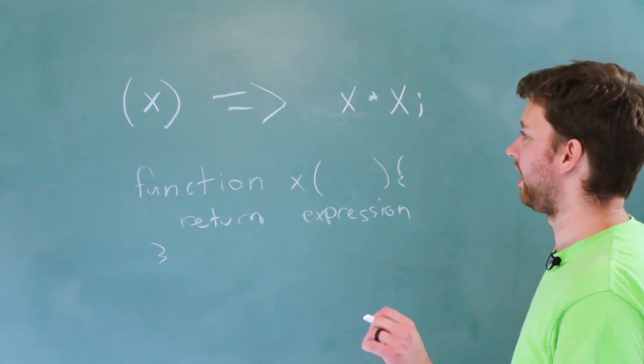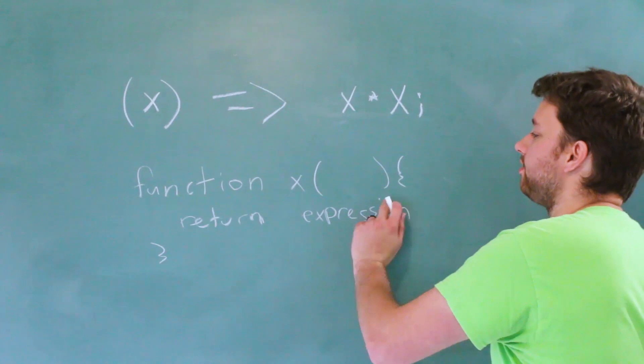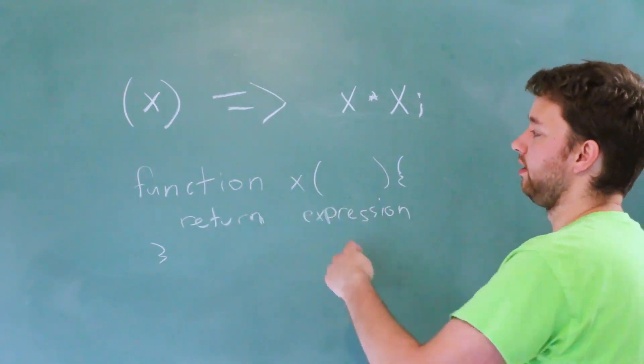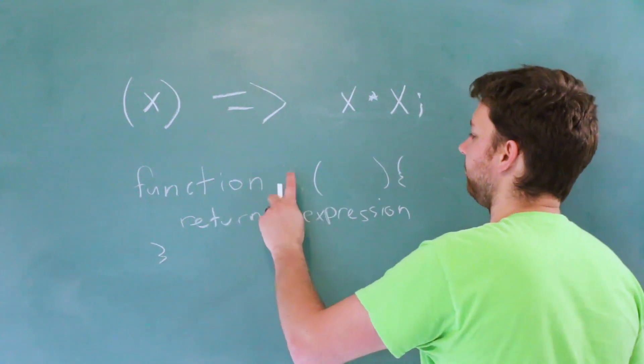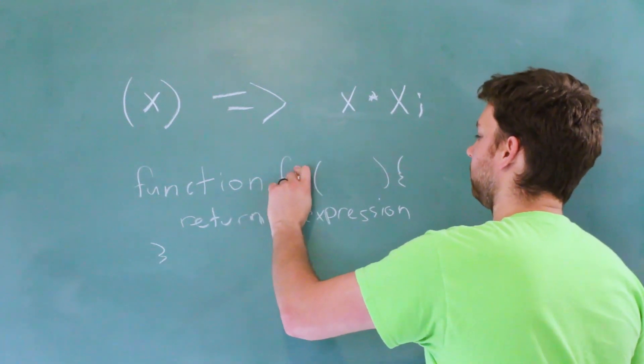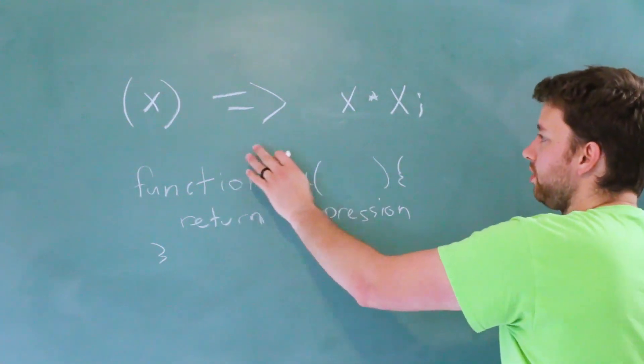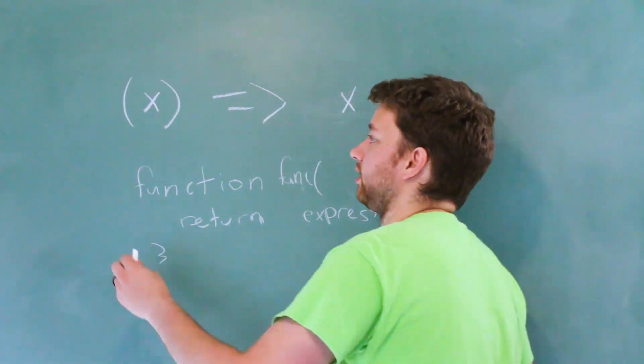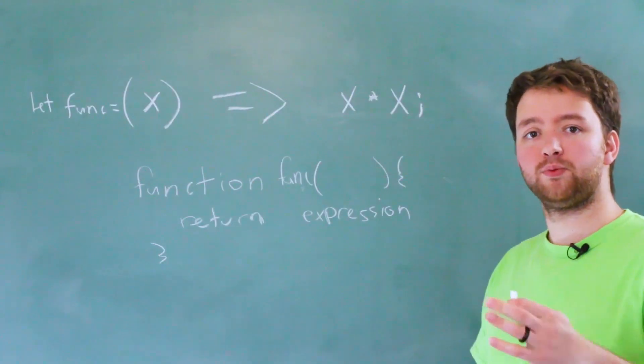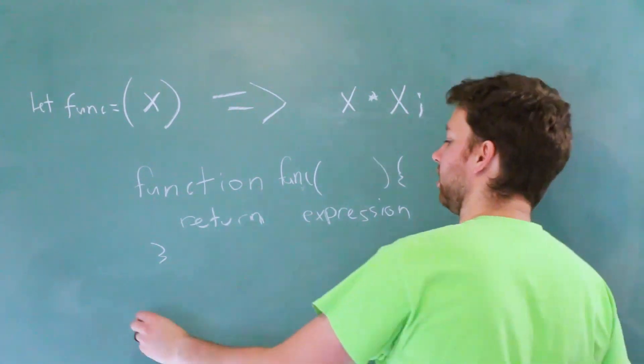Now there is one thing you need to also add here. So right now we can reference this function by using x, which is the name of the function here. Let's give it a better name—let's call it funk. Well, if we wanted to reference this one, we actually need to assign it to a variable, so it might look like this. And then we invoke it the same way we would invoke any other function.